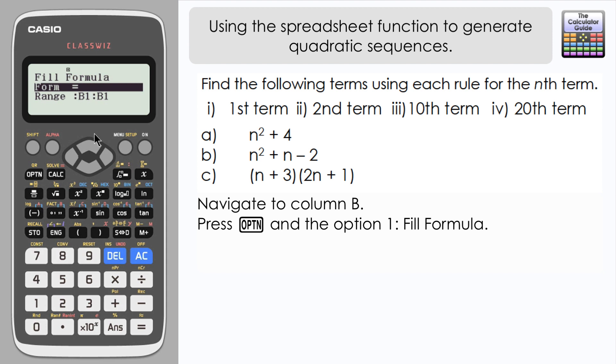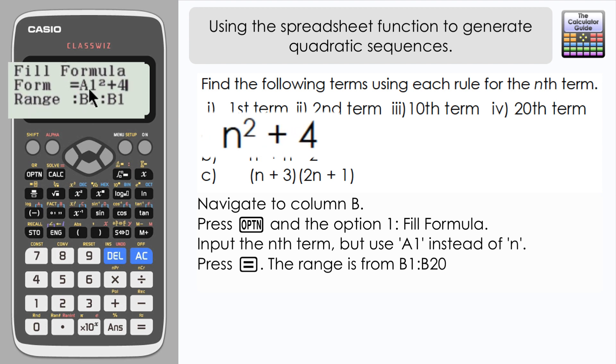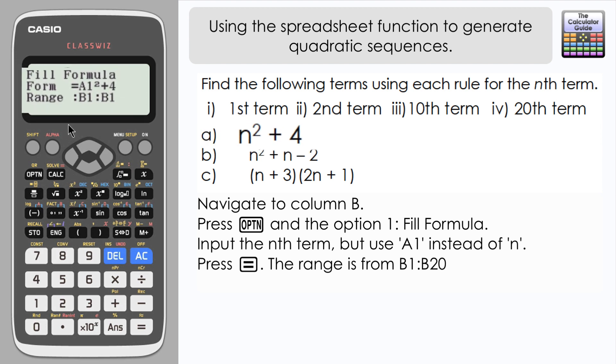So that is the first cell that contains an n value. So I would rewrite the formula in the calculator as alpha A1, and then that's squared, and then plus 4. So I can see I've matched the formula up where there was an n, I've just substituted that for the first cell, in this case A1. So press equals.